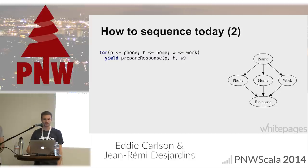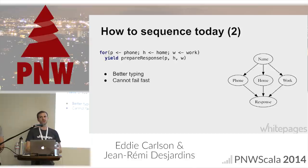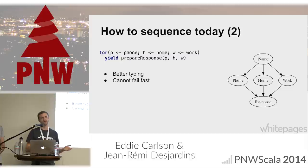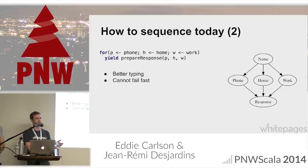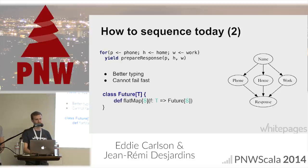There's also the for-comprehension. I take 'p' out of my phone future, 'h' out of home future, 'w' out of work future — it does have better typing, so it solves that one problem. But it cannot fail fast. The for-comprehension is implemented with flatMap and map, and flatMap is very much at odds with failing fast, because in order to move on to the next computation, you need the result of the first one. Here's the function definition for flatMap on Future: on a Future of T, you must have the value of T before moving on. So fundamentally opposed to failing fast.